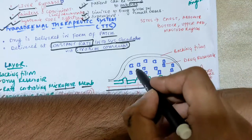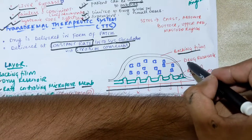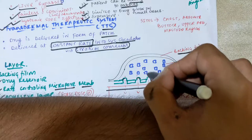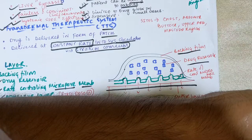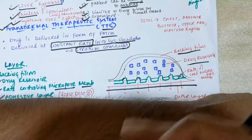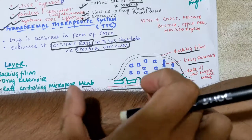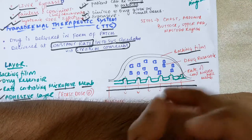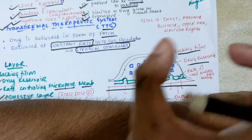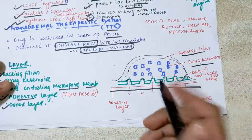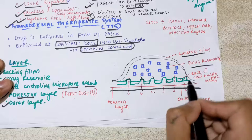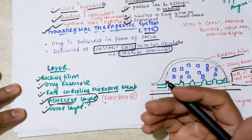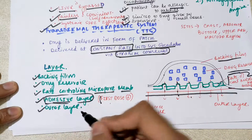Looking at the diagram: considering the skin as the base, the backing film is the top outer layer. Below that is the drug reservoir where the drug is stored. Then comes the micropore membrane with visible pores from which the drug is released very slowly for prolonged action — working for two to three days or weeks. Then the adhesive layer is used to paste the patch on the skin. The first dose is released through the adhesive layer when the patch is first applied; after that, drug is released from the reservoir through the micropore membrane.